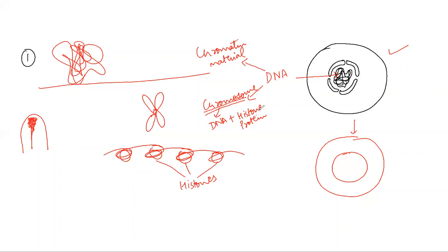When a cell has to divide, whereas chromatin material is loose form of DNA when cell is not dividing. When the cell is not in the dividing state, this is chromatin material whereas this is chromosome.